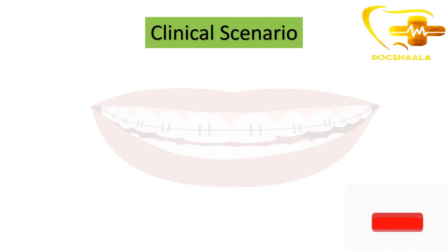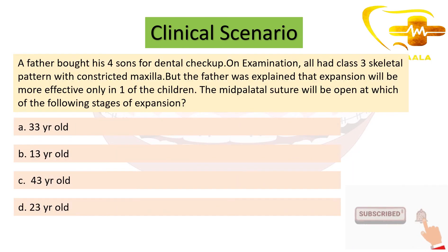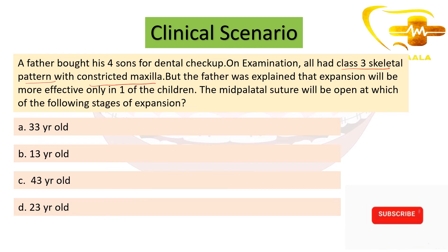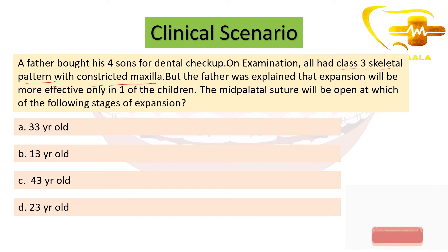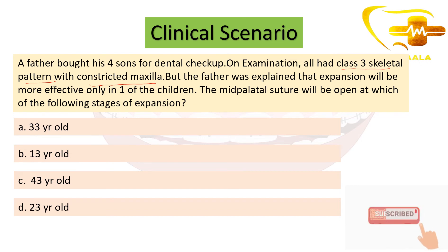Let's look at a clinical scenario: a father brought his four sons for a dental checkup. On examination, all had a Class 3 skeletal pattern with a constricted maxilla. The father will be told that expansion will be effective only in one of the children — so why is that? The mid-palatal suture will be open at which of the following stages of expansion?